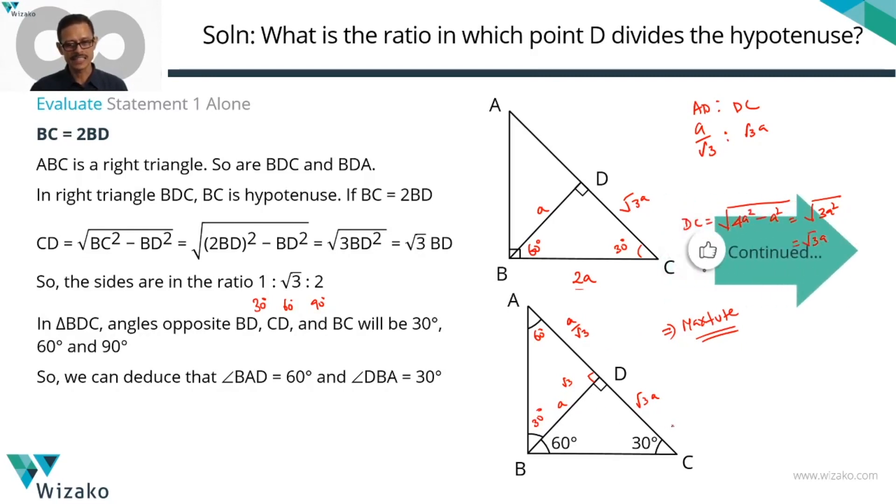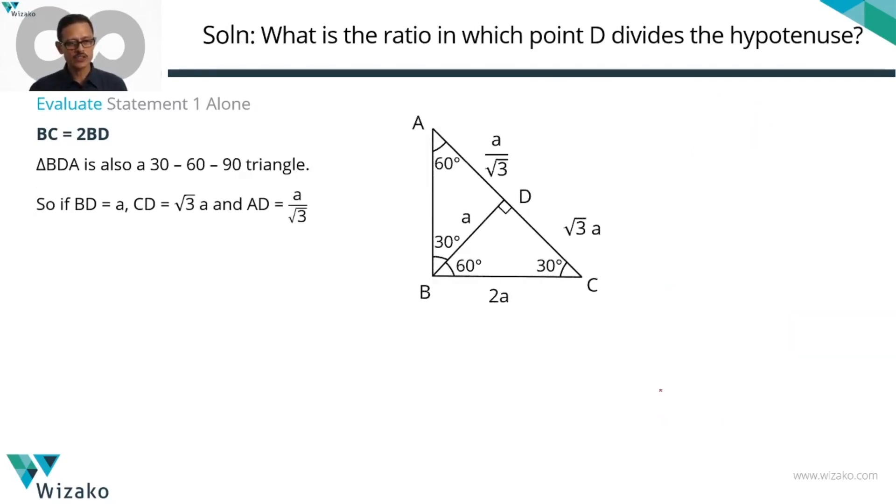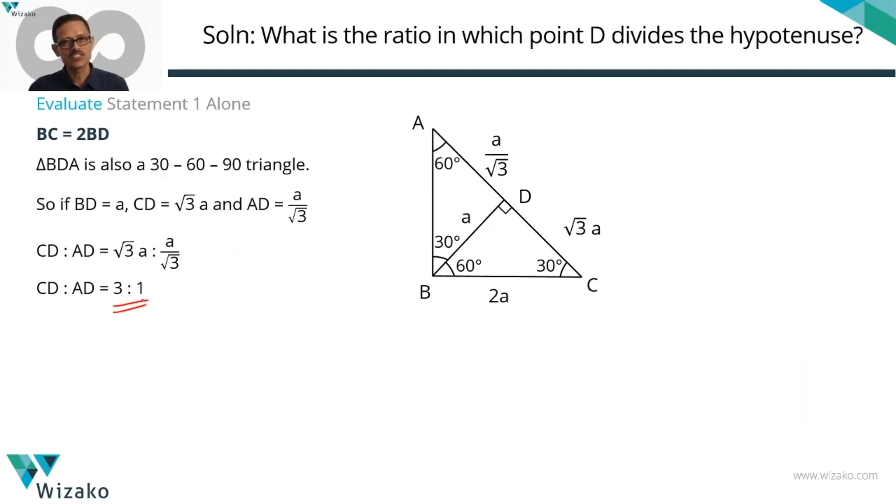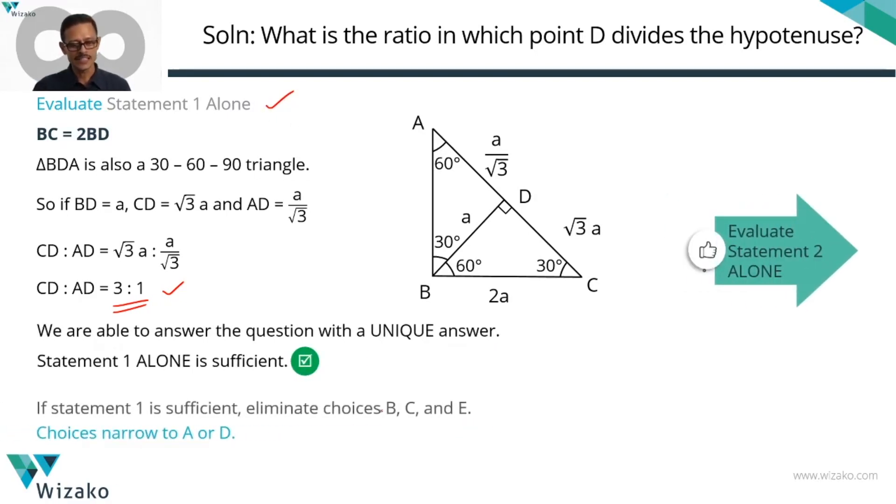Summarize this bit in the next slide. We know that BDA is also a 30, 60, 90. If we take BD to be A, the side opposite to 60 is going to be root 3A. In this case, BD is opposite to 60 degrees. So the one that's going to measure opposite to 30 degrees is 1 by root 3 times, which is A by root 3. So AD is A by root 3, CD is root 3A. We can reduce this ratio as 3 is to 1. Is statement 1 alone sufficient? Yes, it gave us a unique answer. Answer options are going to be A or D. Let's eliminate B, C and E.